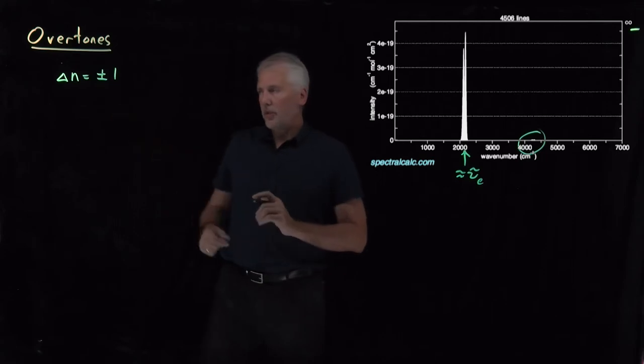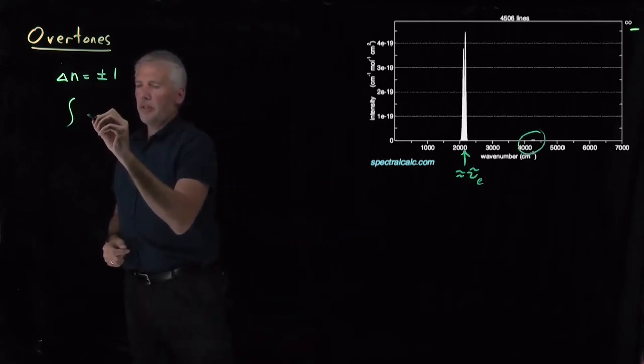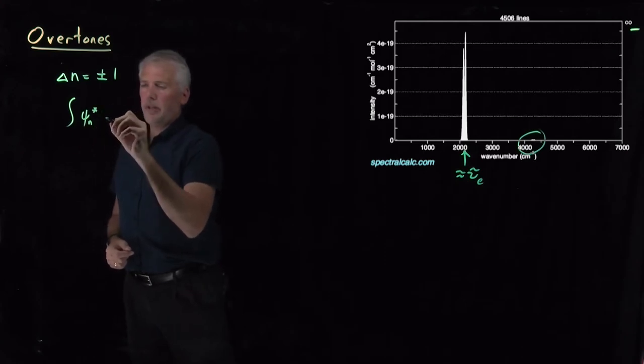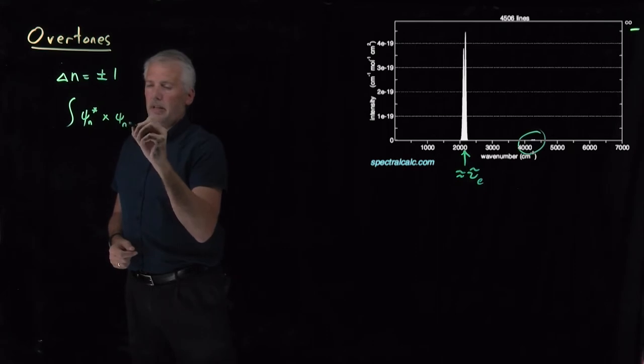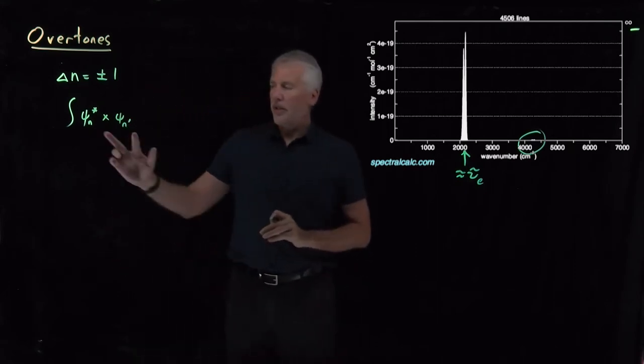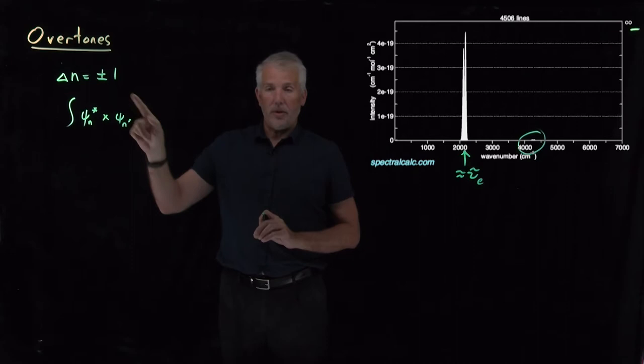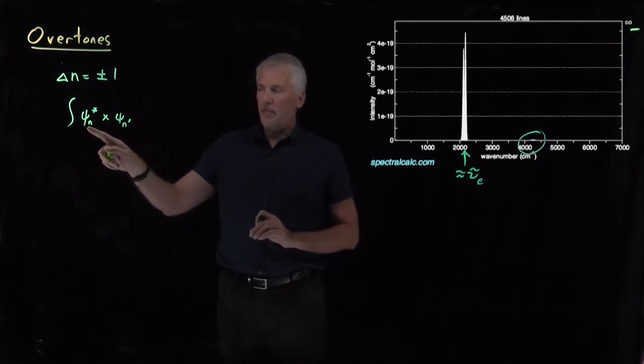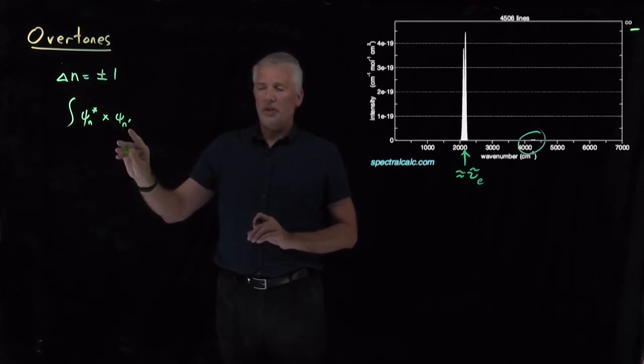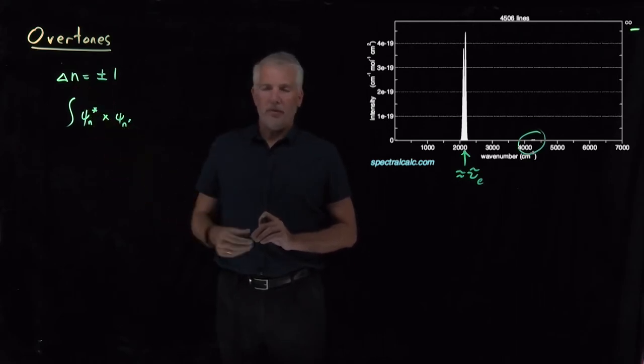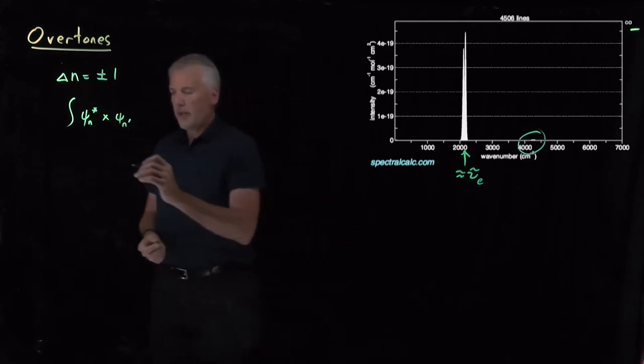Recall the reason for that selection rule was this transition dipole moment. So if I'm making a transition from n to n prime, calculate this transition dipole moment, that turned out to be 0 when n and n prime differed by any value other than 1. That, in turn, was because of the properties of the Hermite polynomials that are hiding inside these wave functions. The Hermite polynomials cause this function to disappear unless n and n prime differ by exactly 1. That's all true for the harmonic oscillator.